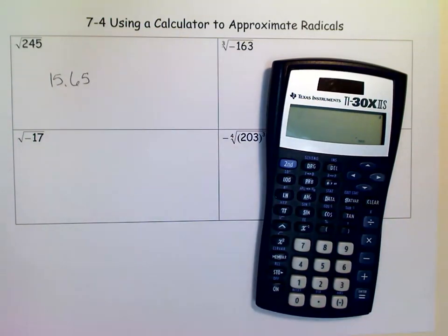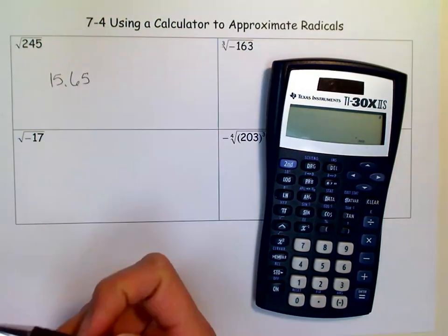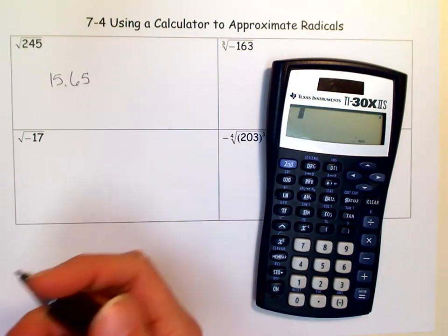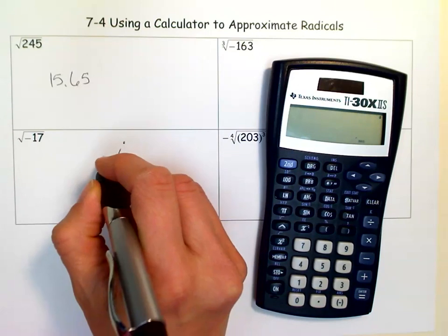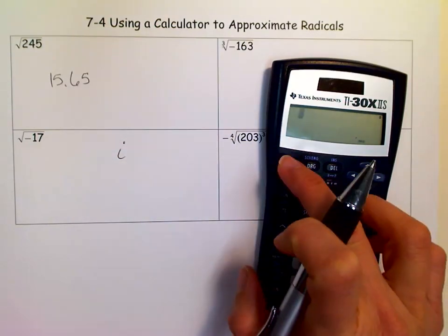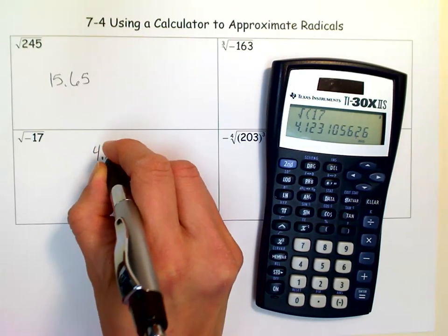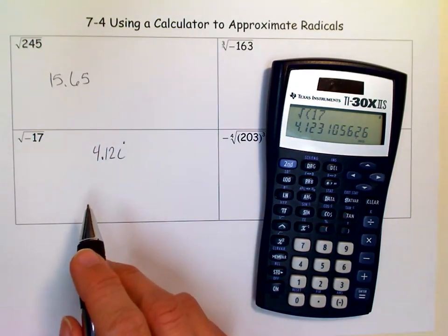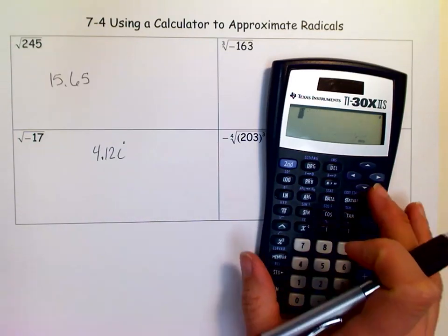Okay, so we want to find the square root of negative 17. Well, if we put that in our graphing calculator, we're going to get an error. Remember, when you square root a negative number, you get i. So it depends on the directions. If they say imaginary or complex numbers, then you'll have your i. Then you could just do the square root of 17, which is 4.12i. Otherwise, if they just say real numbers, then you'd say no solution. It depends on what the directions are.